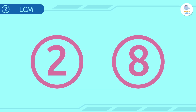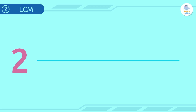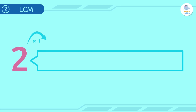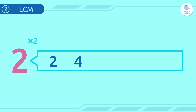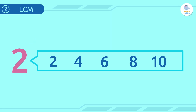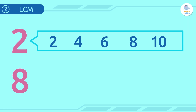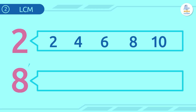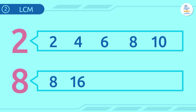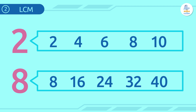Let's start by writing down the multiples of 2: 2×1=2, 2×2=4, 2×3=6, 2×4=8, 2×5=10. Now let's calculate the multiples of 8: 8×1=8, 8×2=16, 8×3=24, 8×4=32, 8×5=40.